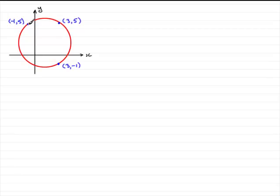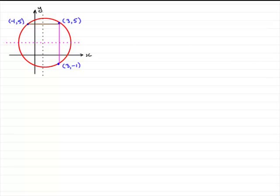We've got a horizontal chord and a vertical chord. To find the center, all we need to do is bisect each of the chords. If we bisect the brown chord and draw the perpendicular bisector, we get a vertical line. Then if we bisect the other chord, we get the perpendicular bisector like that. Because we have horizontal and vertical chords, we get vertical and horizontal perpendicular bisectors, which makes finding the center very easy.